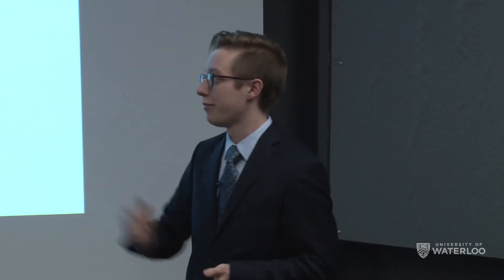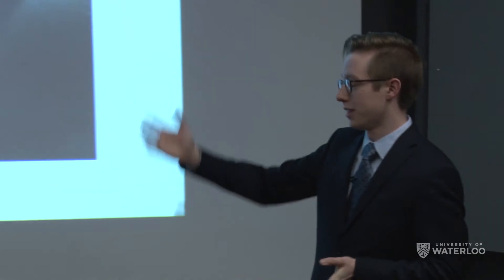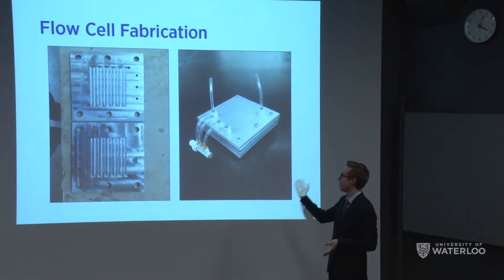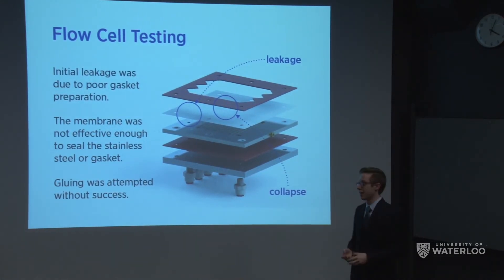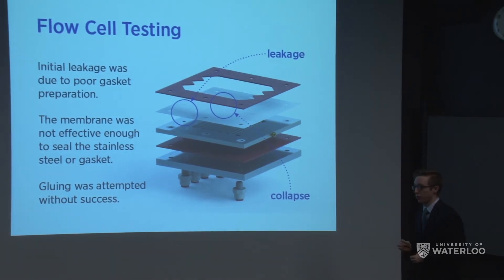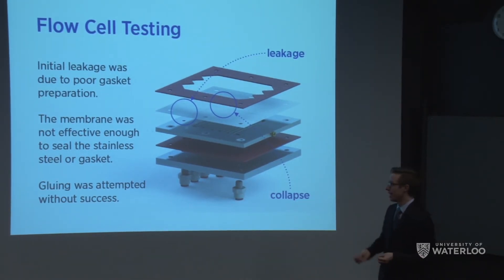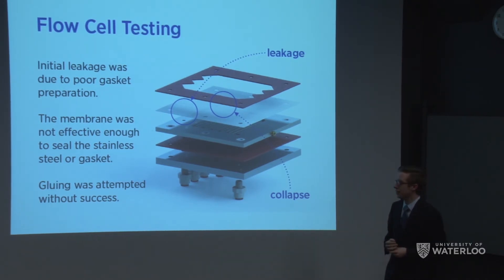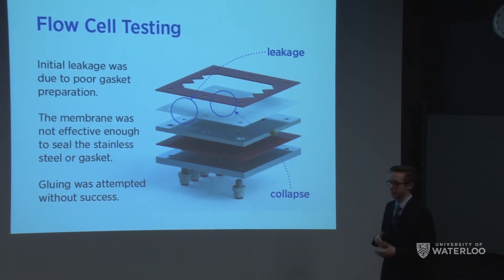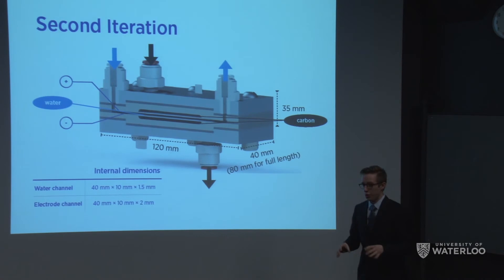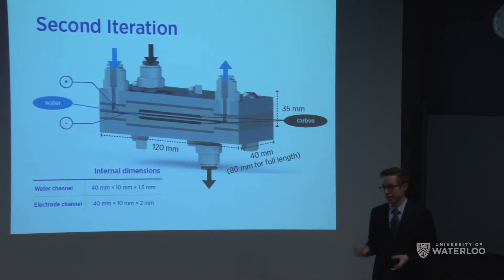On the right is a picture of the fabricated cell after we finished in the machine shop, alongside the assembled cell. With the cell assembled, we did initial flow testing to validate the mechanical design. We ran into some initial problems with poor gasket fabrication, which we addressed quickly. However, there was a persistent issue with the membrane sealing against the gasket and the stainless steel — we tried gluing this to create a permanent seal, but ultimately the membrane was still collapsing in the center of the cell due to a lack of stiffness. With these findings, we went back to the drawing board.